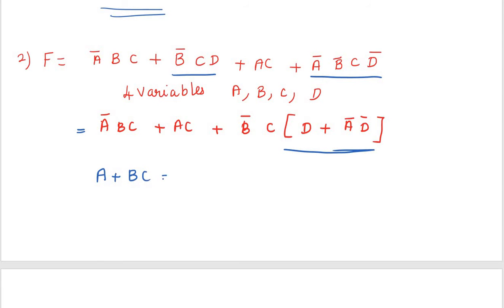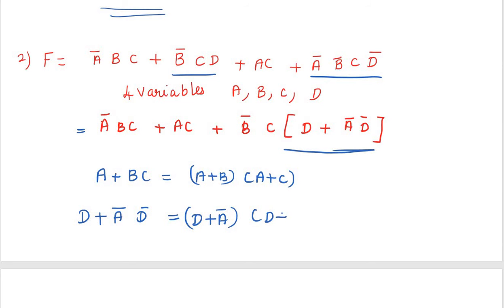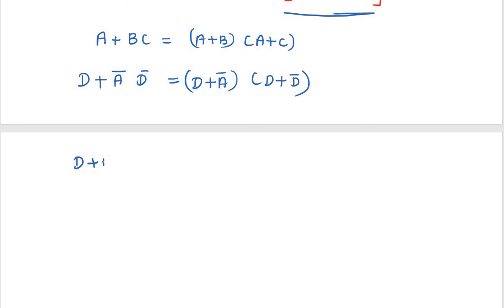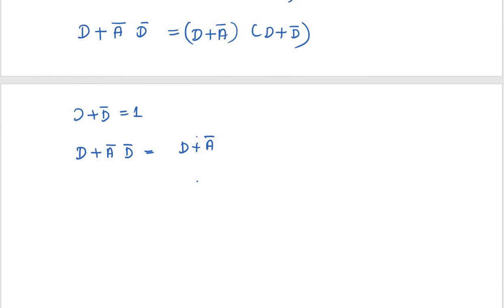Using the distributive law, D + A'D' can be written as (D + A')(D + D'). Since D + D' = 1, we get D + A'D' = D + A'. So the expression becomes A'BC + AC + B'C(D + A').